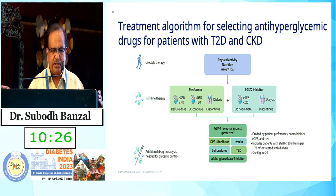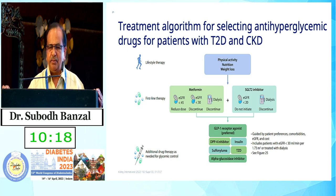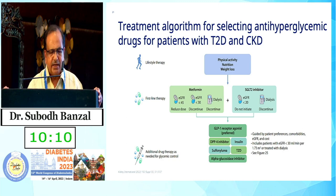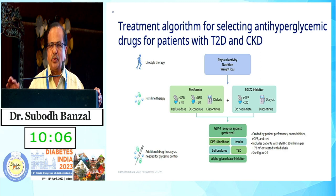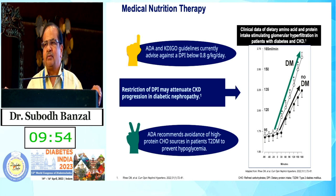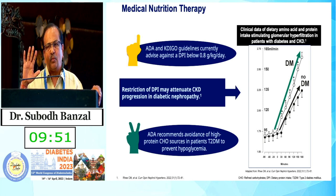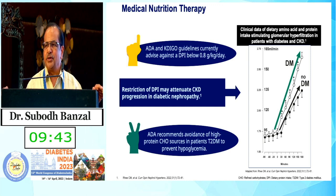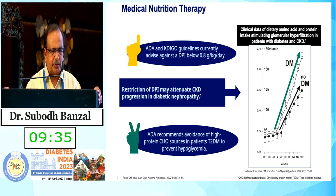Second-line therapy: SGLT2 inhibitors are coming in a big way, with many trials showing they are renoprotective and cardioprotective. Then we can use GLP-1 receptor analogues, DPP-4 inhibitors, and insulin as the mainstay. Glitazones can be used; sulfonylureas — newer ones with lower doses and lower hypoglycemia risk — can be used. Alpha-glucosidase inhibitors can also be used, along with medical nutrition therapy. Daily protein intake should be around 0.8 g/kg body weight, as more protein leads to faster GFR deterioration.